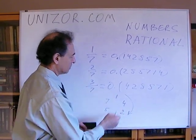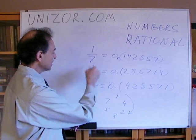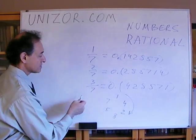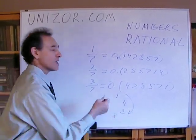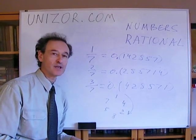Three-sevenths is 0.428571, et cetera. So, all these sevenths up to six sevenths are represented using the same numbers in the same cyclical sequence.